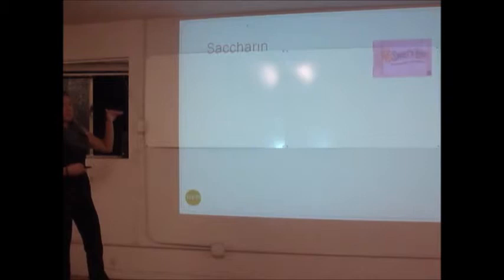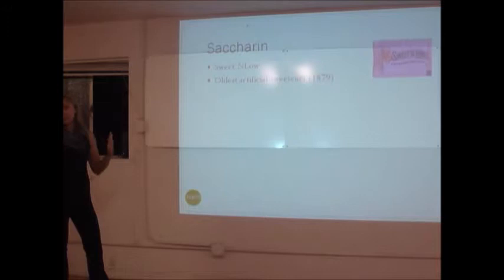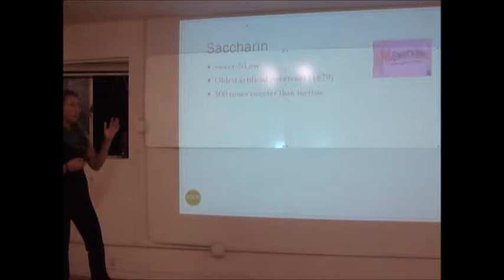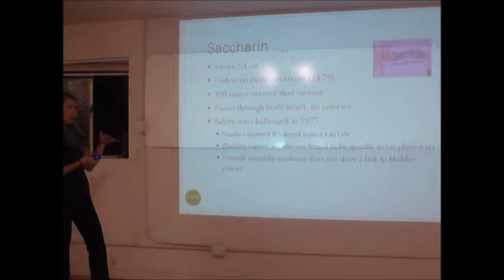First is saccharin — Sweet'N Low. It's the oldest, longest-established artificial sweetener, around since 1879, and it's 300 times sweeter than sugar, which is why a little packet really amps things up. It passes through the body with no calories; we don't absorb anything from it. As I go through these alternative sweeteners, I'll cover how sweet they are, how long they've been around, whether they have calories, and the research.